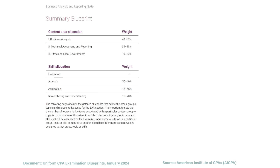Let's take a look at a summary of the BAR exam. It's broken out into three different topics: Business Analysis, which is 40 to 50% of the exam; Technical Accounting and Reporting, which is 35 to 45%; and State and Local Governments, which is 10 to 20%. Business Analysis is essentially everything that was on the BEC exam before it was removed, and sections two and three are all topics that were previously on the FAR exam.